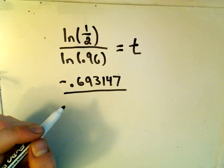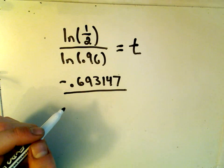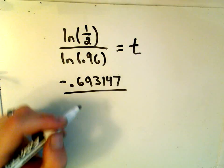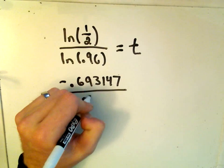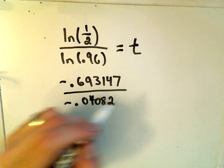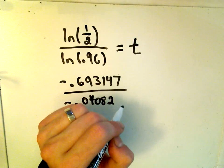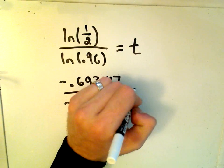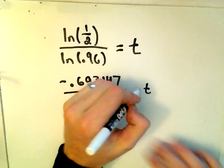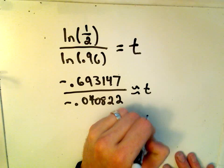We'll calculate ln of 0.96. So ln of 0.96 is the value negative 0.040822. And if we round it off, it looks like the next one's a 2 as well.